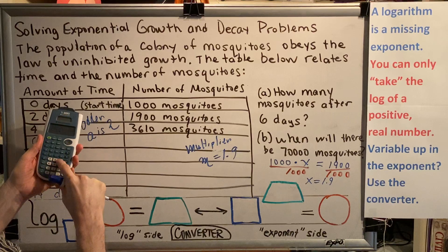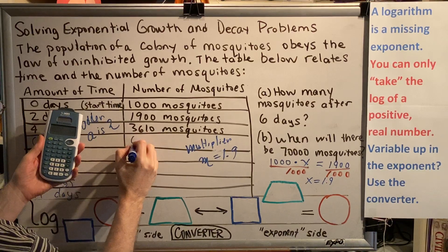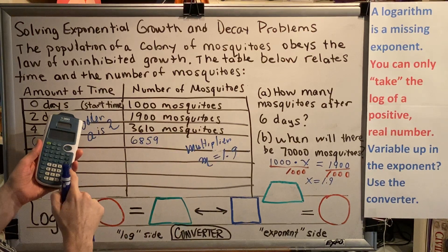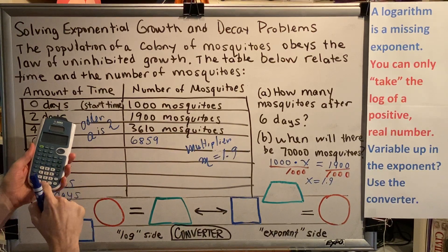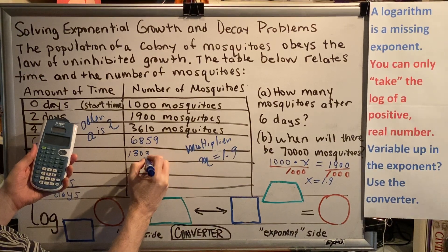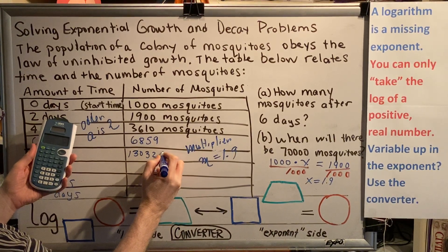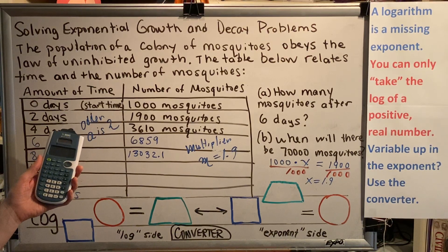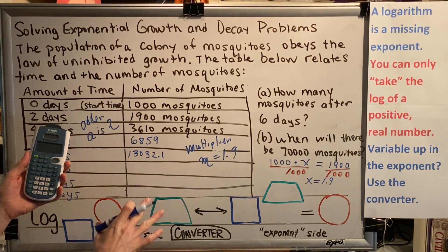Now 1,900 times 1.9 gives the next value 3,610. 3,610 times 1.9 is 6,859 mosquitoes. That number times 1.9 gives you 13,032.1 mosquitoes. Leave the 0.1 in there because this is a mathematical model.